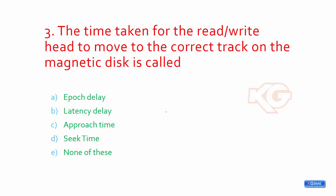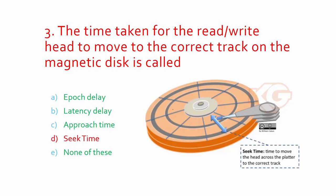The time taken for the read/write head to move to the correct track on the magnetic disk is called? Is it an epoch delay, latency delay, approach time, or seek time? Options C and D are pretty close, but the actual answer is seek time. Here come the tracks, concentric circles. The distance between tracks - the read head moving time - is called the seek time. The seek time is the time to move the head across the platter to the correct track.